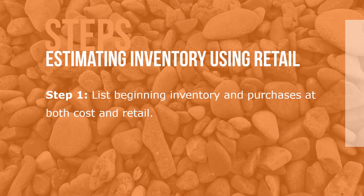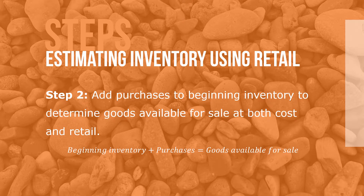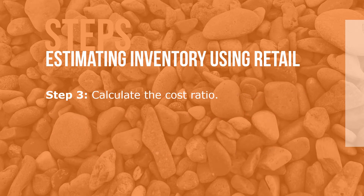Here are the steps in estimating inventory using the retail method. Step 1: List the beginning inventory and purchases at both cost and retail. Step 2: Add the purchases to beginning inventory to determine goods available for sale at both cost and retail, where beginning inventory plus purchases equals goods available for sale.